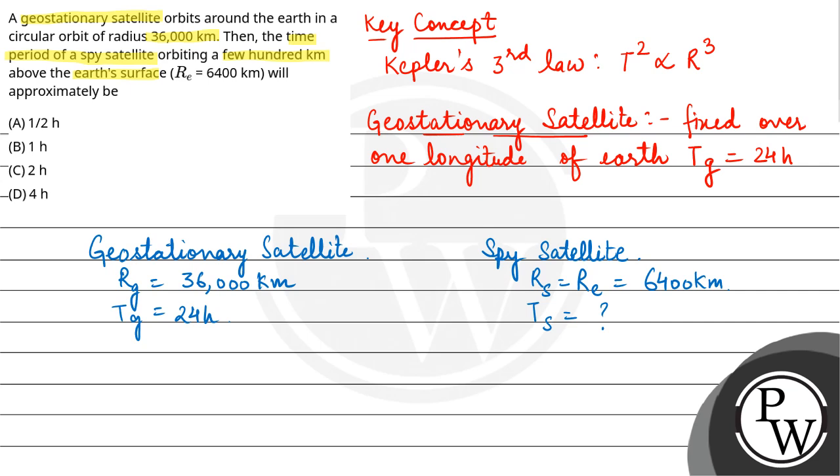So, using Kepler's law, TG upon TS, the square, will be equal to RG upon RS cubed.